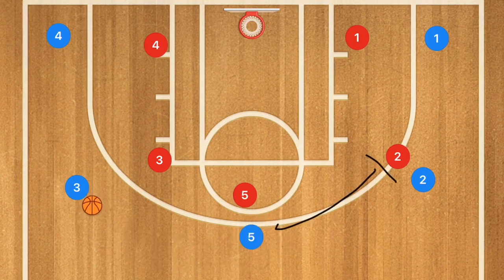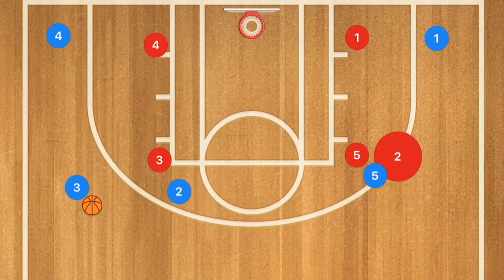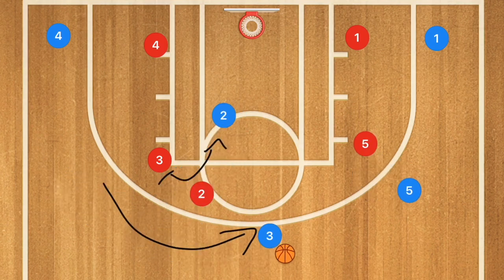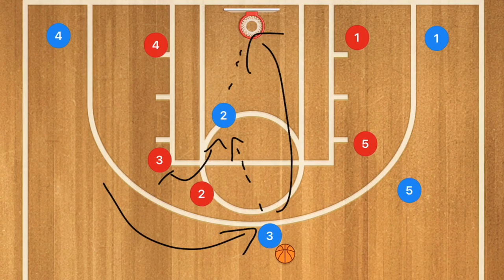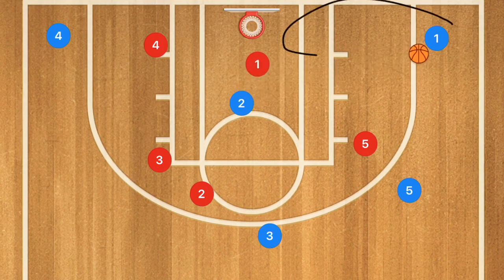Player 5 is going to go and set a screen onto player 2. Player 2 is going to use that screen, then go and screen for player 3. When he goes and screens for player 3, what we're hoping for is there to be a lot of switches involved. Player 3 is going to use that screen, and player 2 is going to roll off of that screen. Player 3 could have that shot, or he could pass to player 2 for a layup. Anytime you get that ball into the paint, help side defense is going to come out, in which case this would be a 3-point shot for player 1.